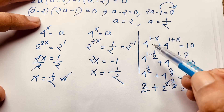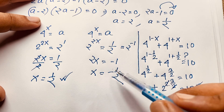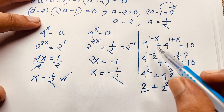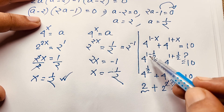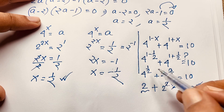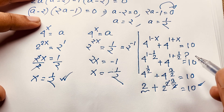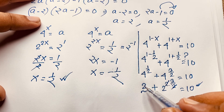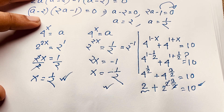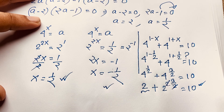For x equals negative 1/2: the exponents swap, giving 4 to the power 3/2 plus 4 to the power 1/2, which is 8 plus 2 equals 10. Left hand side equals right hand side in both cases. Thank you all — if you enjoyed this video, please subscribe to my channel for more interesting videos. Goodbye, take care!